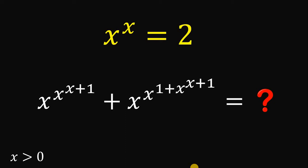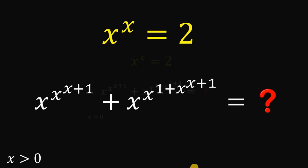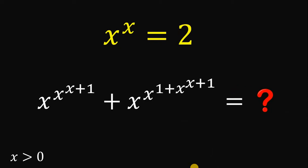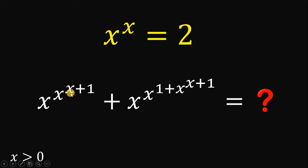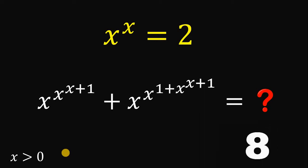Good day everyone, here's our math challenge for today. If x raised to x equals 2, then what is the value of this expression: x raised to x raised to x plus 1, plus x raised to x raised to 1 plus x raised to x plus 1, wherein x is strictly greater than 0? You can pause this video if you want to give this problem a try.